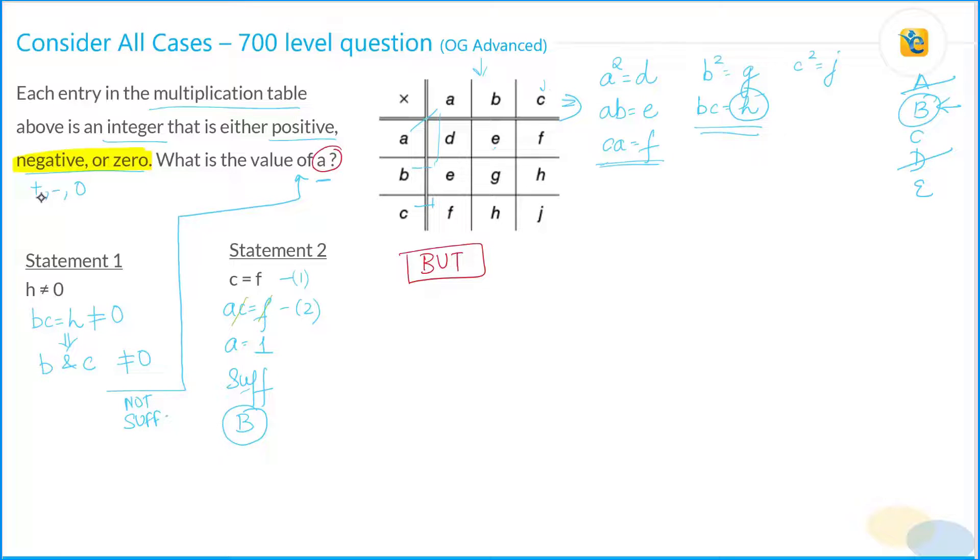Yeah, that sounds good, but there is a big issue which you did not consider. There is a very, very big issue. Remember, go back to your information. Each of these entities here, each of these entities can be positive, negative, or zero. So what if c is equal to f is equal to zero?